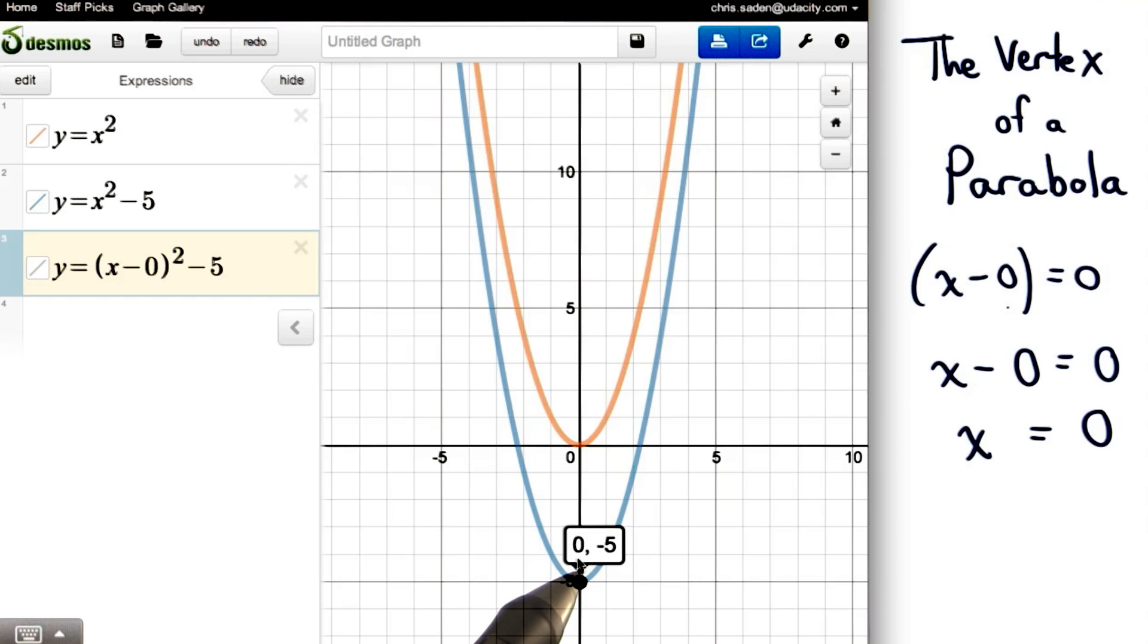So, now we can quickly see where this vertex comes from in our equation. The 0 is here, and the negative 5 is here.